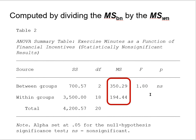The way we compute the obtained F statistic is by dividing the mean square between groups — the value under MS to the right of 'between groups' — by the mean square within groups. If you take the 350-something mean square between and divide it by the 194-something mean square within, you get our F statistic of 1.80. We'll go through that step by step before long.